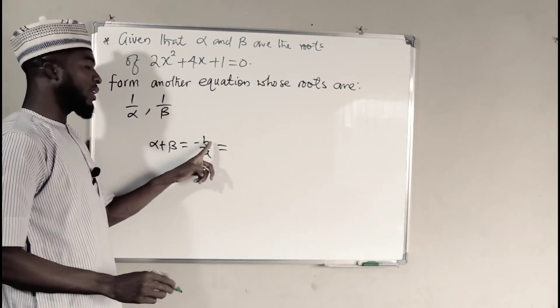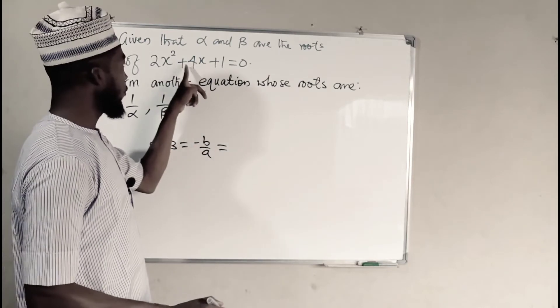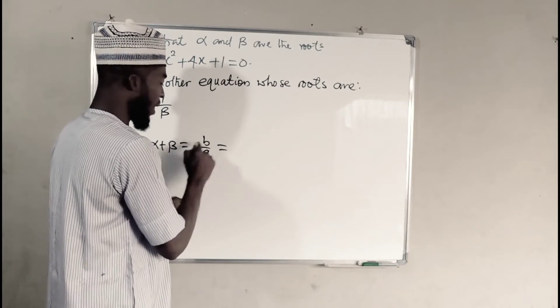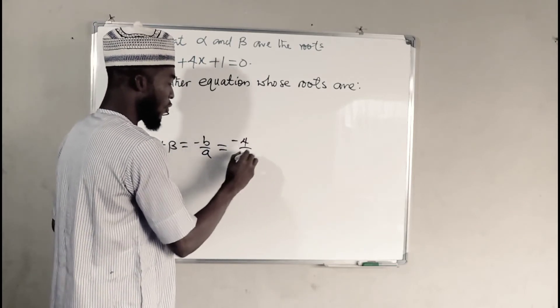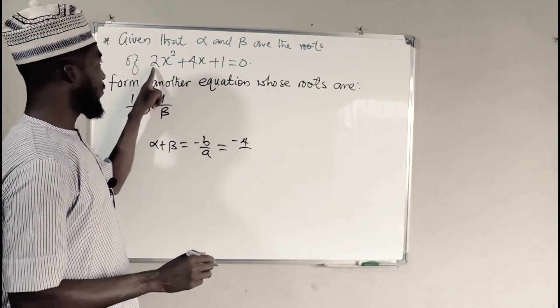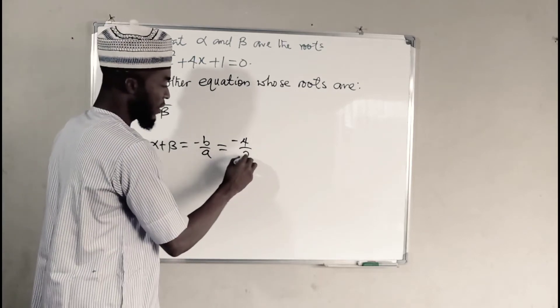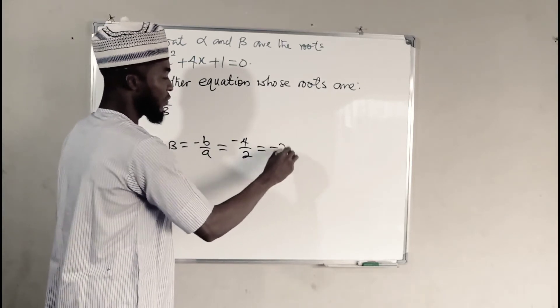And negative b, b is the coefficient of the middle term, which we have here as 4. So we have negative 4 over a is the leading coefficient, which we have here as 2. Altogether, if you divide, you get negative 2.